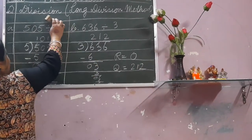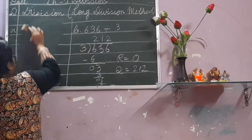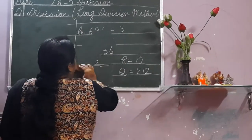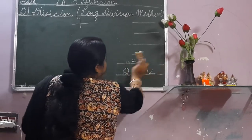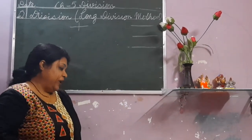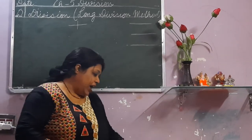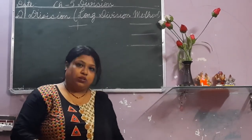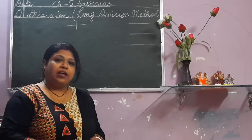Hope you have understood. Following this, you will do division in your notebook very neatly — all the sums of page number 96 and 93, as I have given you in the attachment.